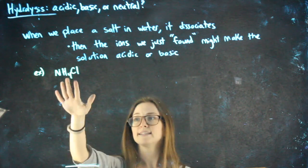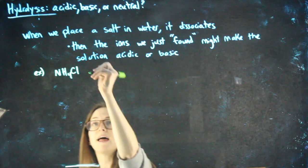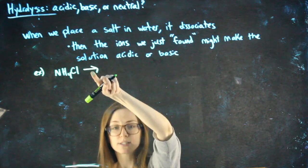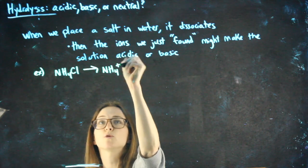So first thing, I identify that this is a salt. Cool. We have a salt. Then I'm going to dissociate that salt. Salts use single arrows so that I can see what ions I have to work with.